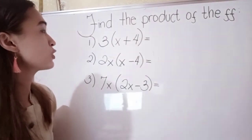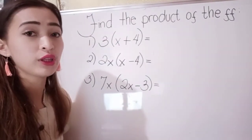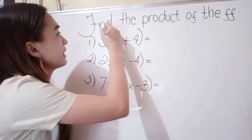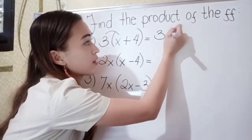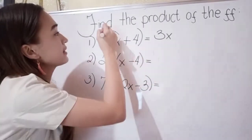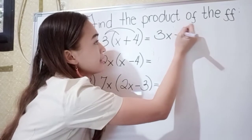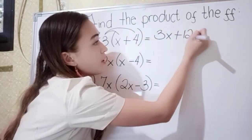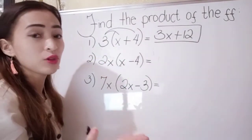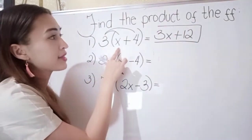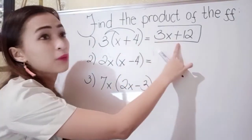First, to answer number 1, we're going to use the distributive property. So 3 times x is 3x. Next, 3 times positive 4 gives us positive 12. So the final answer is 3x plus 12. Again, using the distributive property: 3 times x is 3x, and 3 times positive 4 is positive 12.